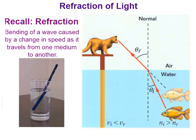If light comes at a perfectly 90-degree angle to the surface of water and changes from air into water, changing medium and changing speed, will it bend? No. The only time light will not bend is if it is traveling exactly at 90 degrees, because that is the normal as well. There will be no angle of incidence or angle of reflection, and in that case it will simply change speed but not direction.